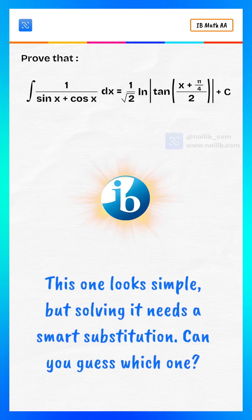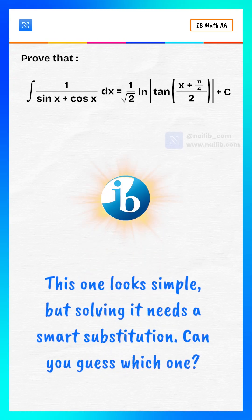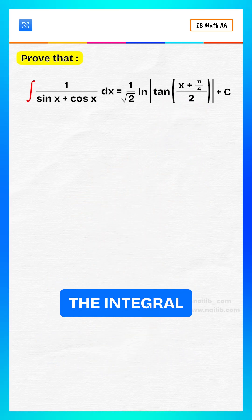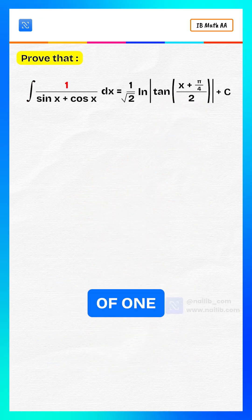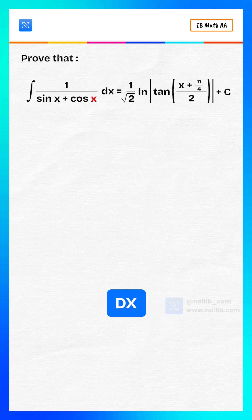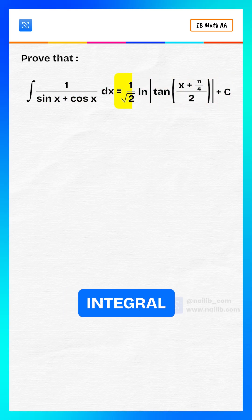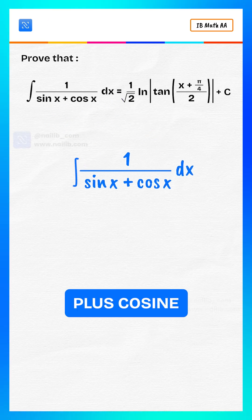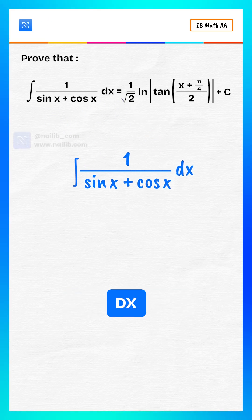This one looks simple, but solving it needs a smart substitution. Can you guess which one? Prove that. The integral of 1 divided by sine x plus cosine x dx is equal to this. Integral of 1 divided by sine x plus cosine x dx.